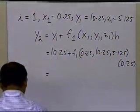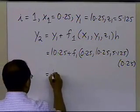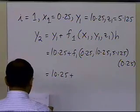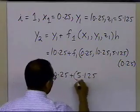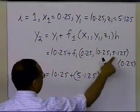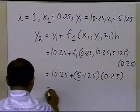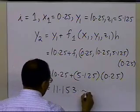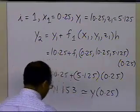And this value here, for the value of f1, we get 10.25 plus the value of f1, which is 5.125. The reason why that's the value is because f1 is nothing but the value of z, which is 5.125, times 0.25. And this value here turns out to be 11.153, and that would be the approximate value of y at 0.5.